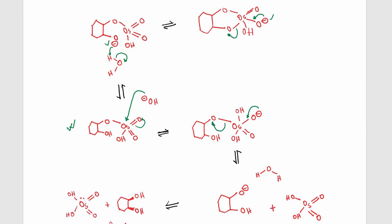We will have a negative charge on this oxygen atom here, and it will come closer to the water molecule and grab a hydrogen atom. This bond will break and leave the electrons onto this oxygen atom, and we will form our final product — two hydroxy groups added across the double bond.